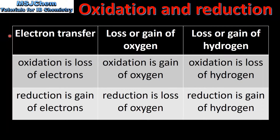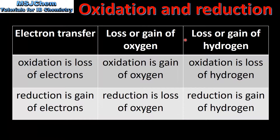In terms of electron transfer, oxidation is the loss of electrons and reduction is the gain of electrons. In terms of loss or gain of oxygen, oxidation is the gain of oxygen and reduction is the loss of oxygen. And in terms of loss or gain of hydrogen, oxidation is the loss of hydrogen and reduction is the gain of hydrogen.